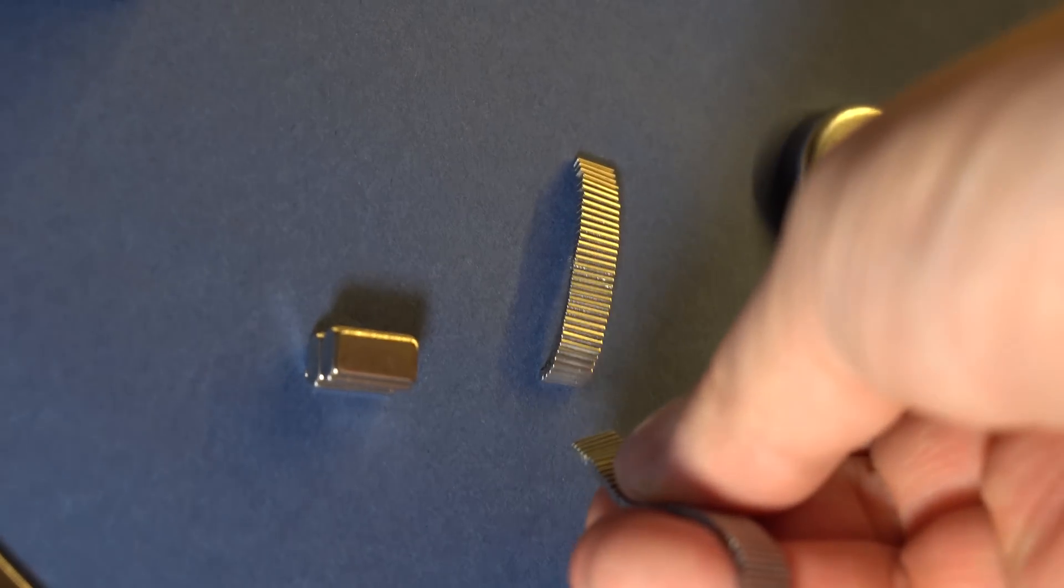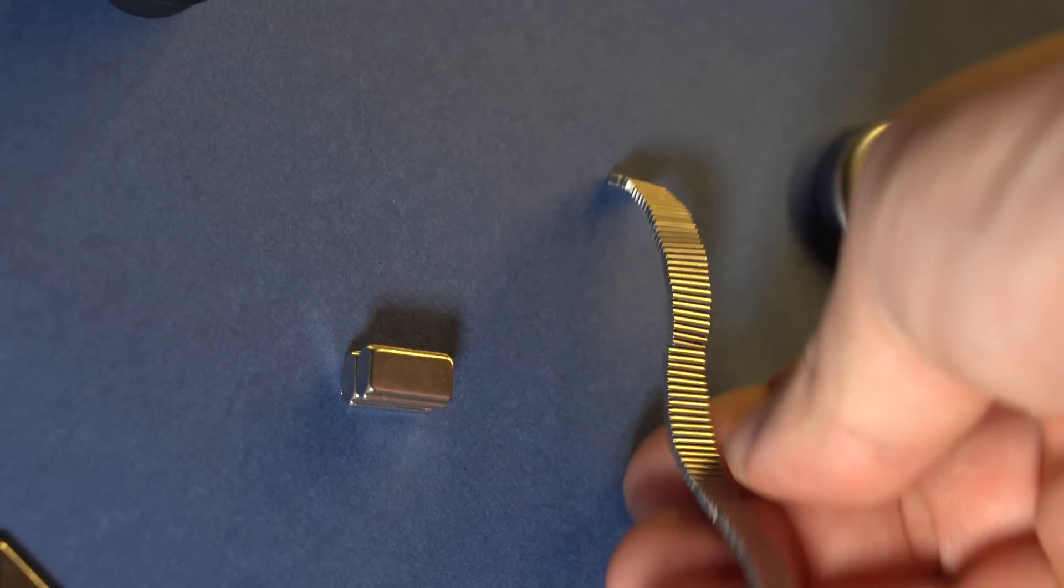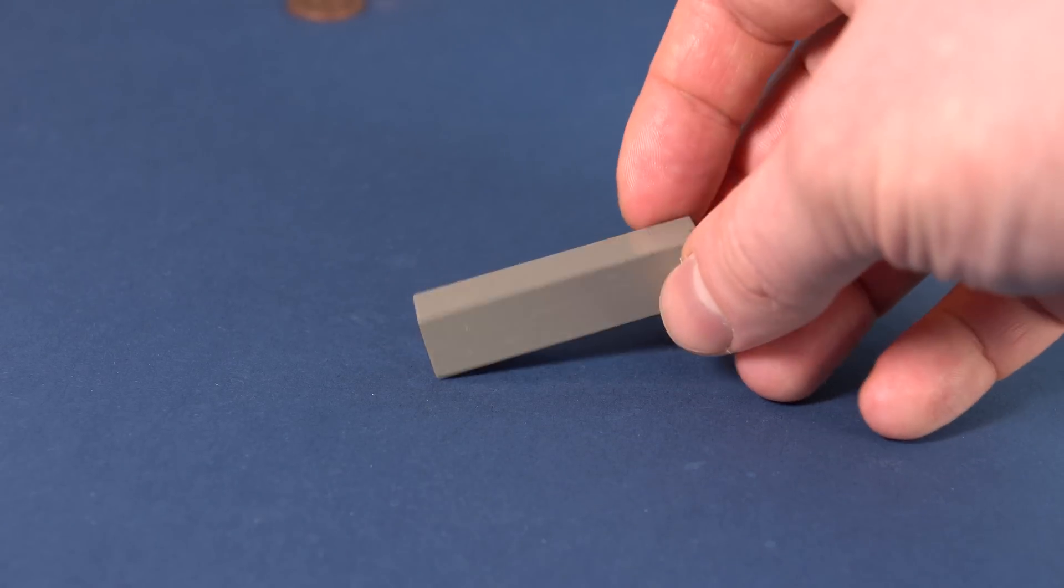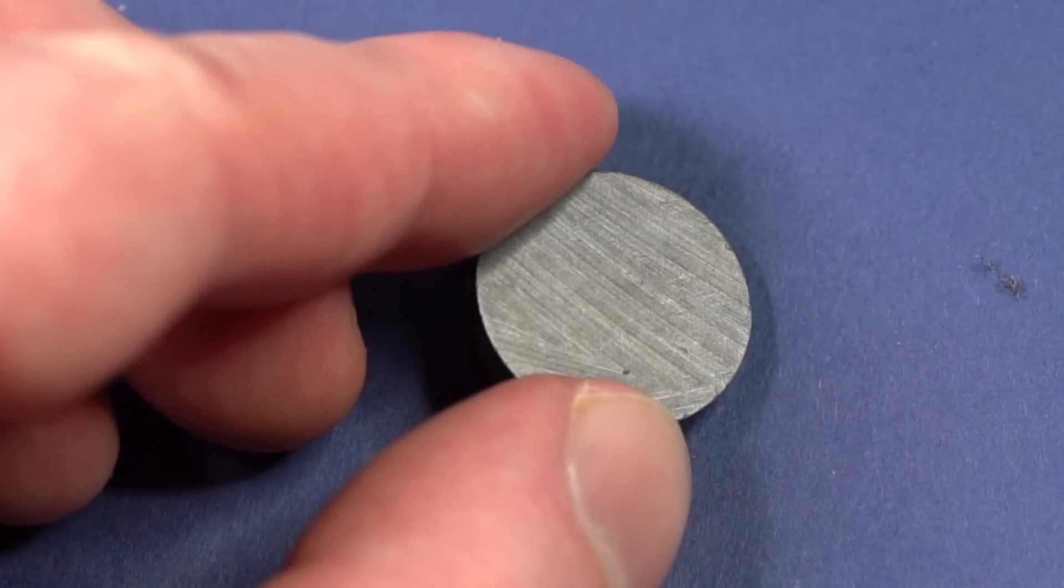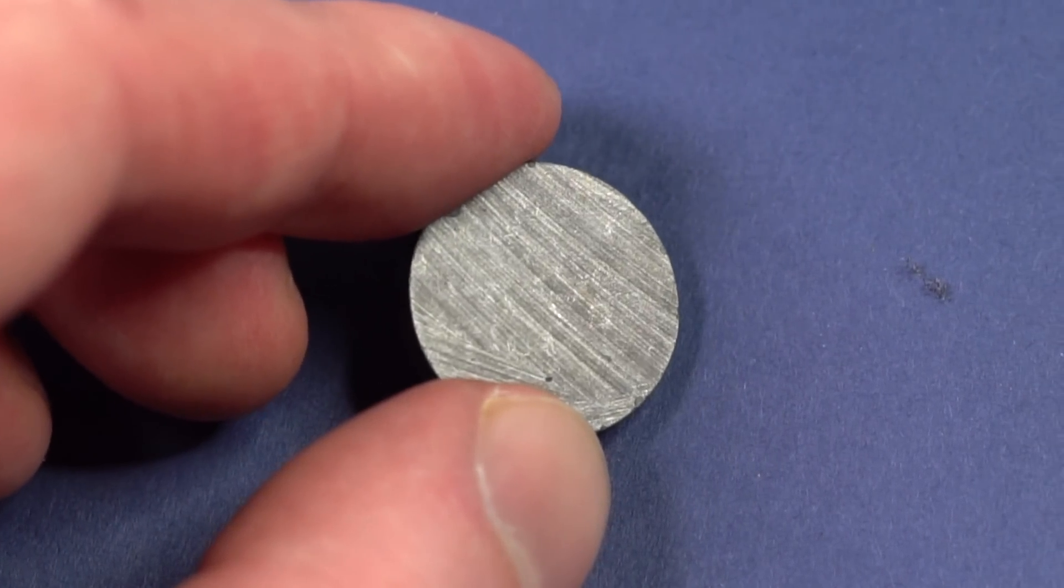However, it became common to use magnets less than 50 years ago when people started using cheap samarium cobalt magnets and later on even cheaper ferrite magnets.